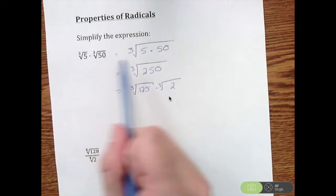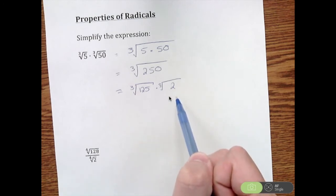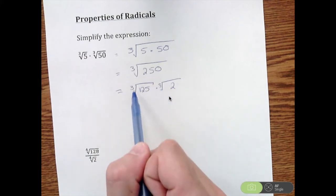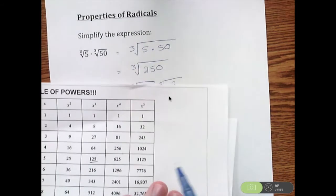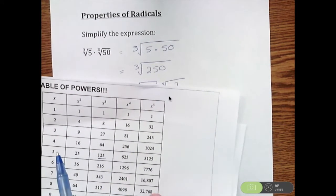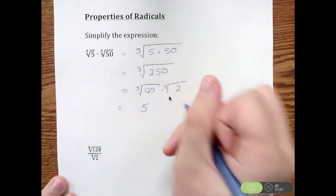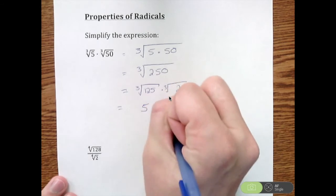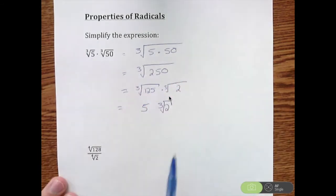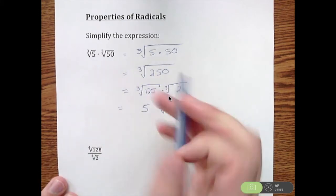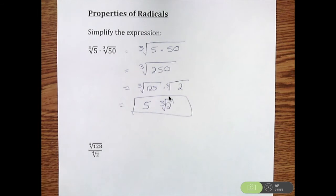So I separate them to simplify as much as possible: the cube root of 125 times the cube root of 2. The cube root of 125 equals 5, and the cube root of 2 is not something we can simplify further. So this problem fully simplified gives us 5 times the cube root of 2.